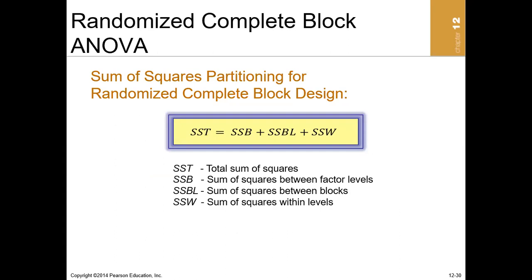Another example is determining the best training program out of four choices for various departments within a company. When doing randomized complete block ANOVA, we need the sum of squares total, the sum of squares between factor levels — which we already know how to compute — and now the new element: the sum of squares within the block. The sum of squares within is the residual, obtained by adding SS_block to SS_between and subtracting from SS_total.